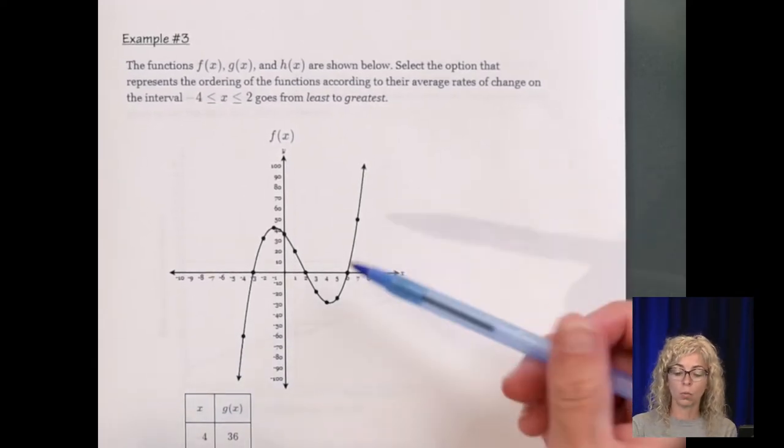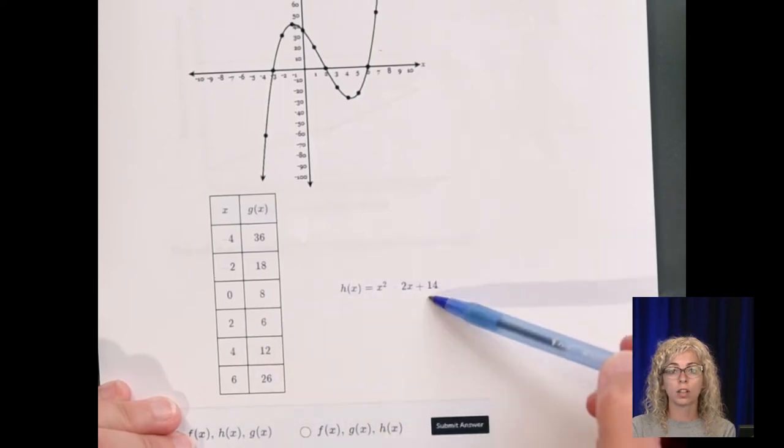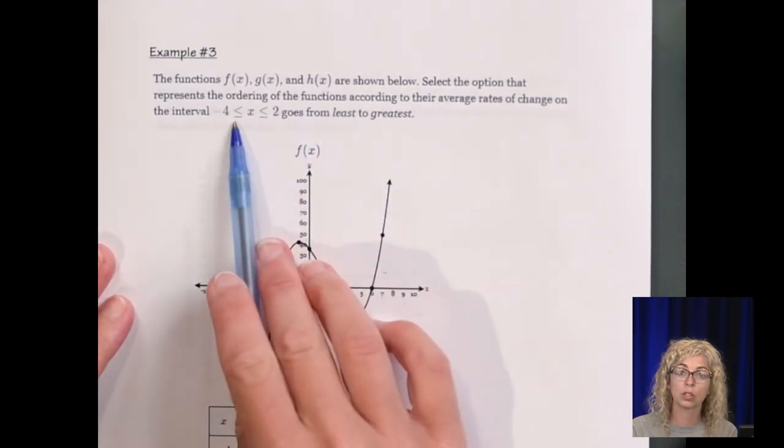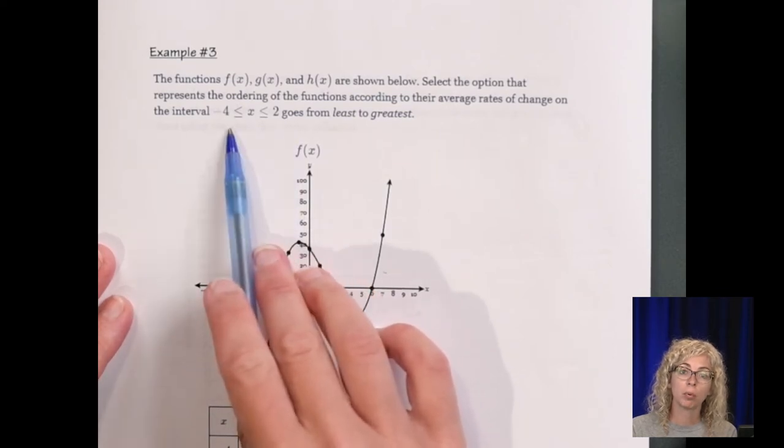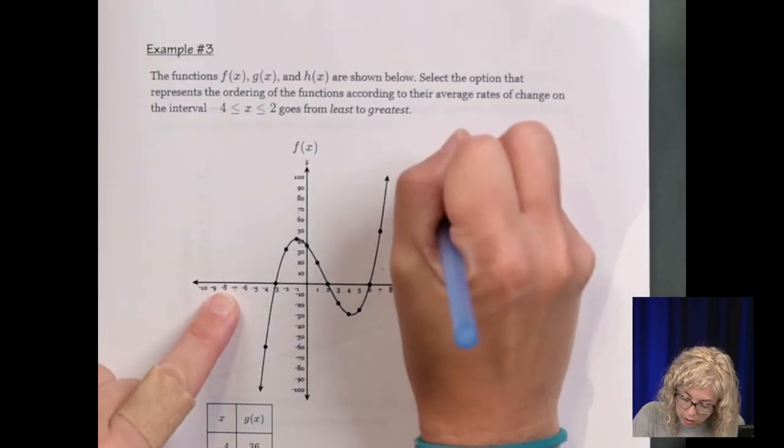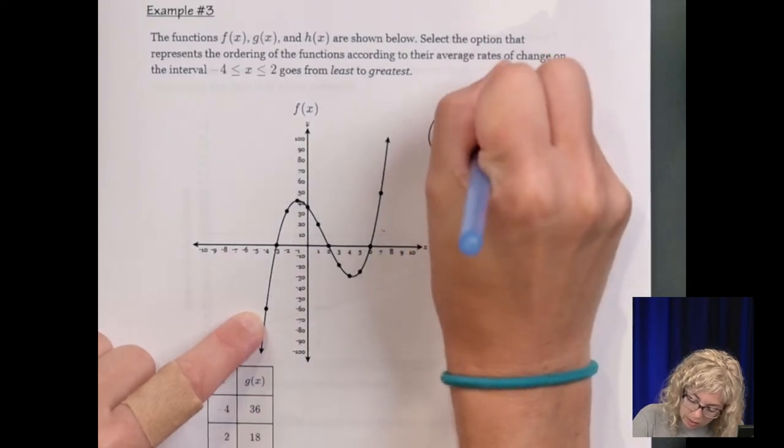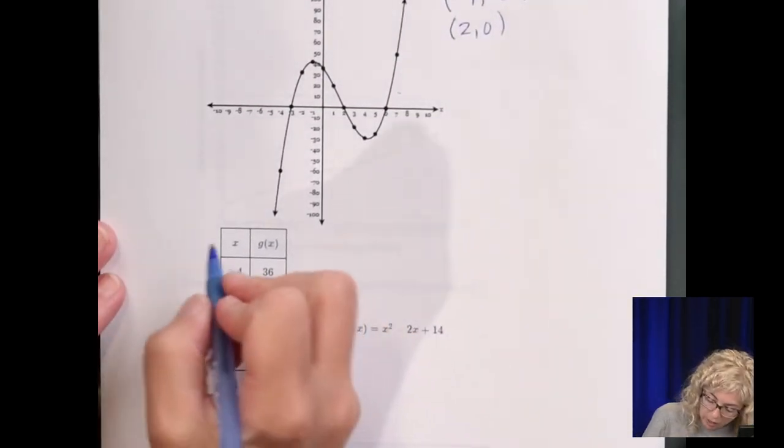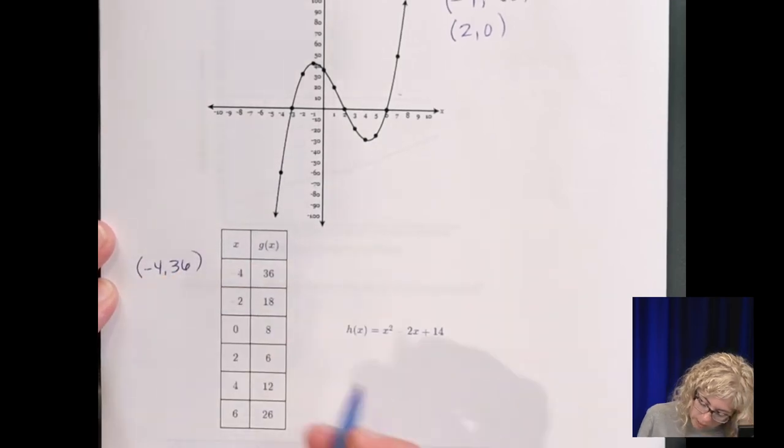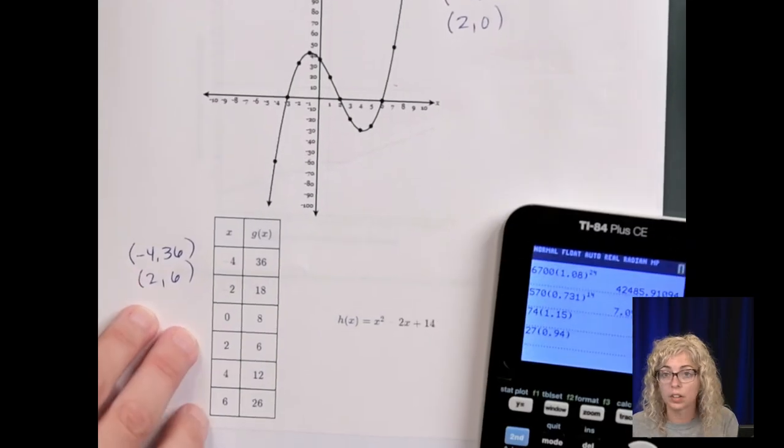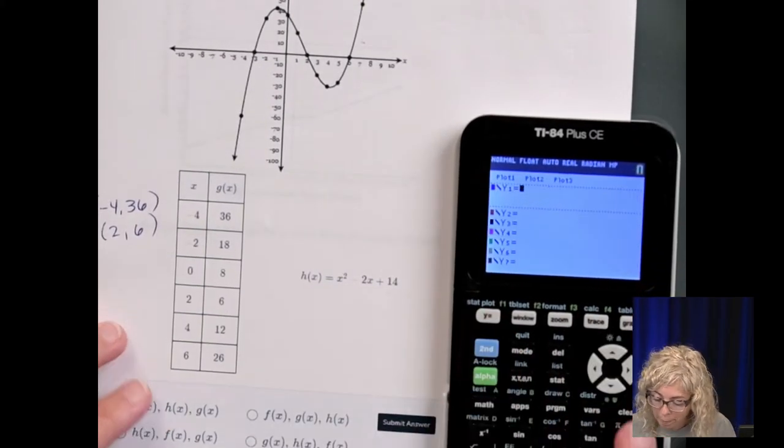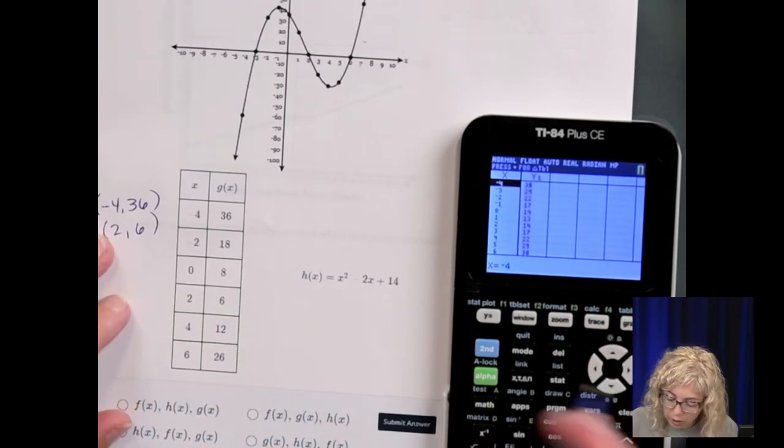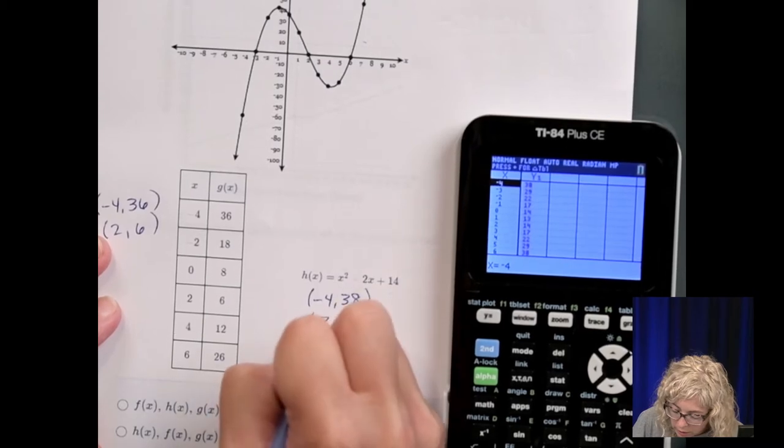So now we have three functions. One's a graph, one's a table, and then one's given the calculator. We need to order the average rates of change from least to greatest over this interval. So let's first write down the points where x is negative 4 and 2 for each. So negative 4, negative 60, and 2, 0. That's gonna make it easier. Here, we've got negative 4, 36, and 2, 0. And here I have to go to the calculator to type this function in. x squared minus 2x plus 14. So we've got negative 4, 38, and 2, 14.